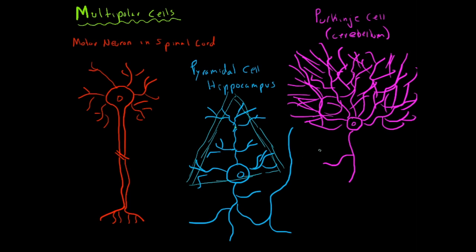And the dendrites emerge from both the apex, which is the apical dendrites here, and the base, which is the basal dendrites here. They're found in the hippocampus and throughout the cerebral cortex, as I indicated right here.